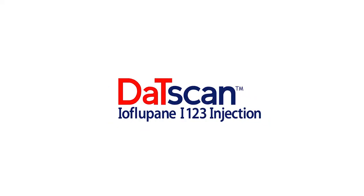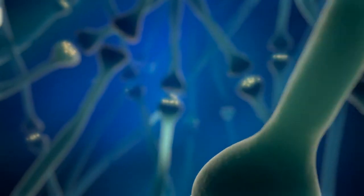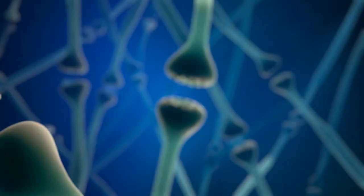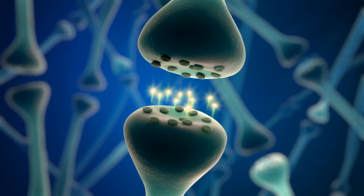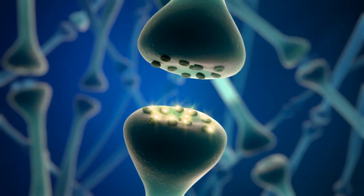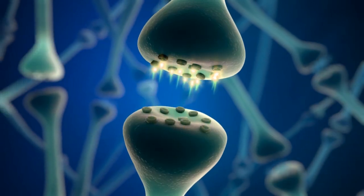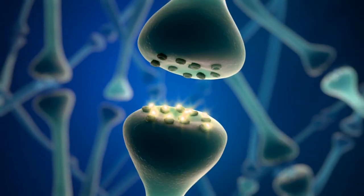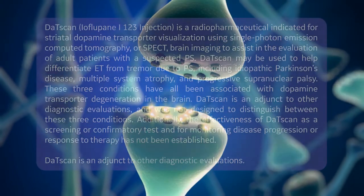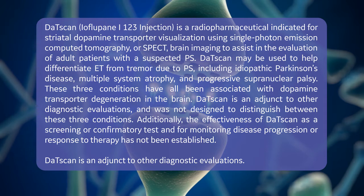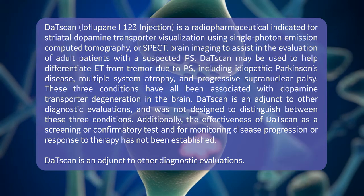The Mechanism of Action for DATSCAN Ioflupane I-123 Injection. In patients with a suspected Parkinsonian syndrome, or PS, DATSCAN may be used as an adjunct to other diagnostic evaluations to help differentiate essential tremor, known as ET, from tremor due to PS. This video will help explain how DATSCAN works and how it can help in the evaluation process. Let's begin by reviewing the indications and use for DATSCAN.